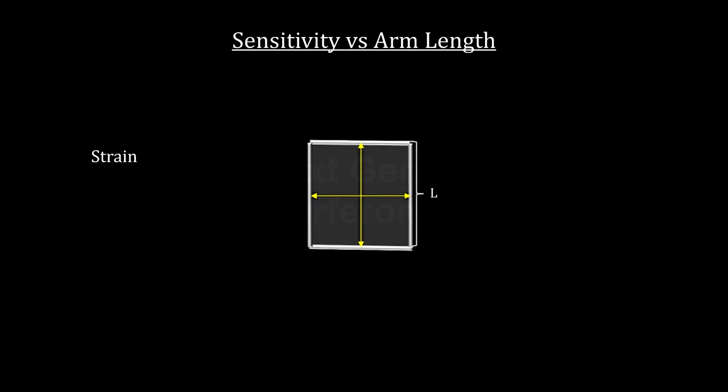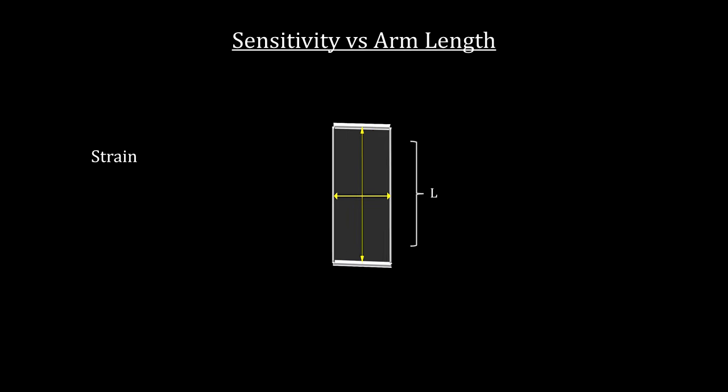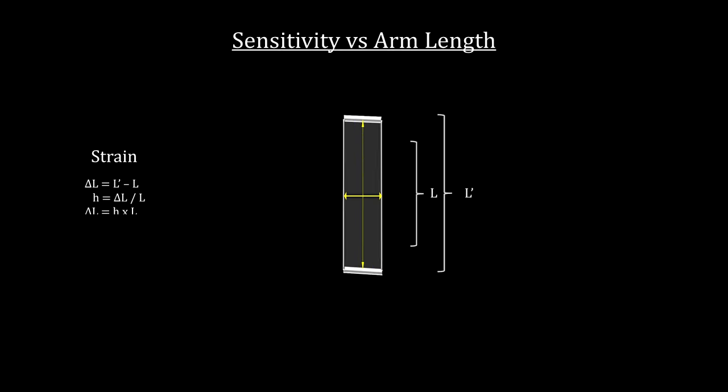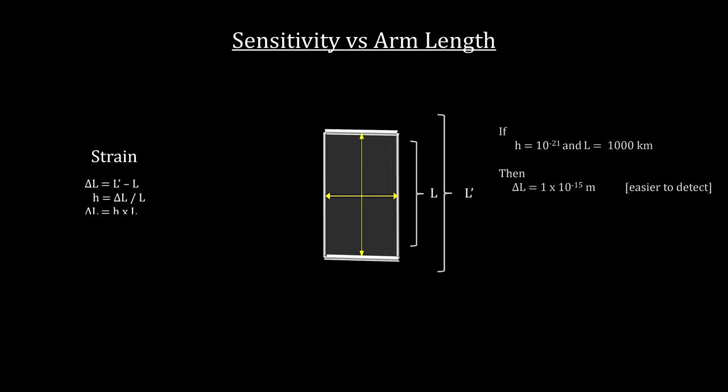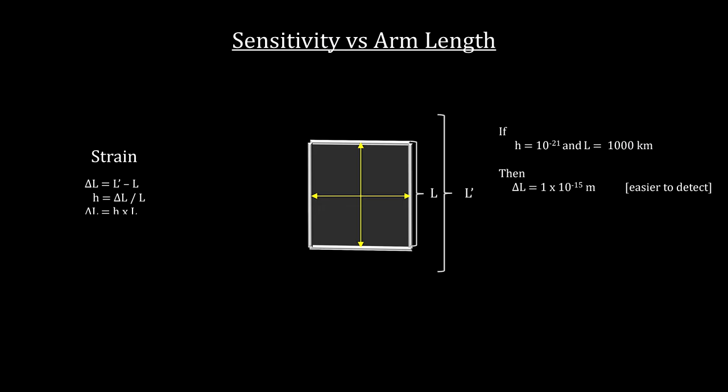All interferometers detect gravitational waves by measuring the change in distance between two arms as the wave passes through. The longer the arms, the greater the change. With shorter arm lengths, we get smaller length changes. At some point, noise levels will prevent wave detection.